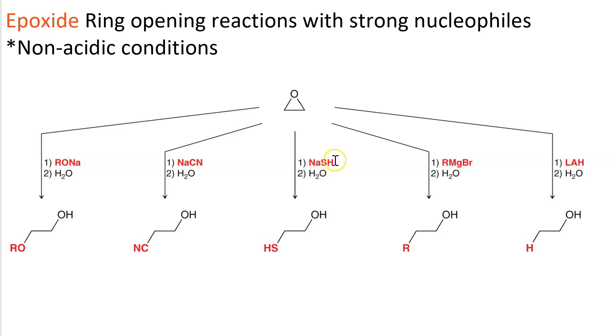When we use sulfhydride, we create a thiol, vicinal to an alcohol.